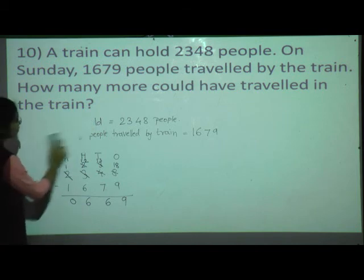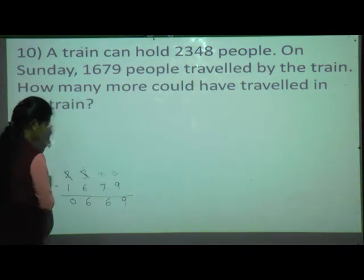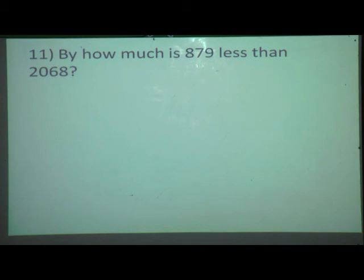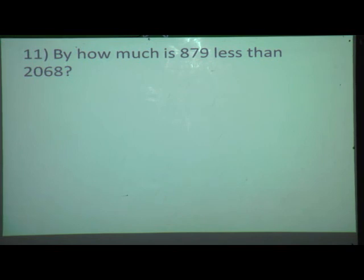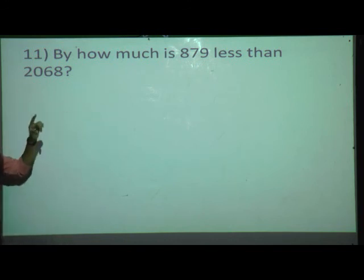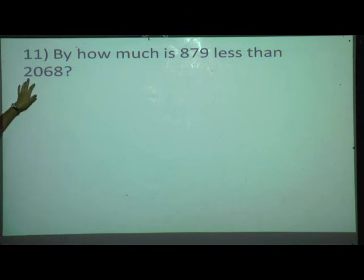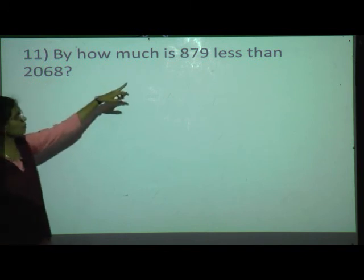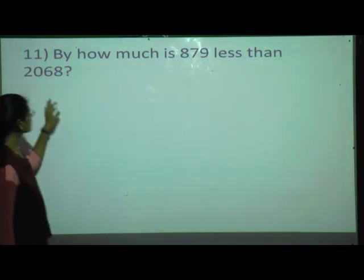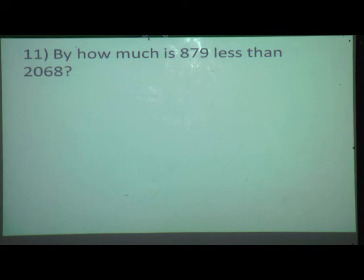Now question number 11: By how much is 879 less than 2,068? This question is similar to question number 8. The greater number is 2,068 and the smaller number is 879. You have to solve this question by your own. Draw a diagram similar to question 8 and do the subtraction to get the answer.